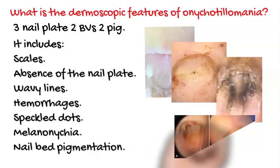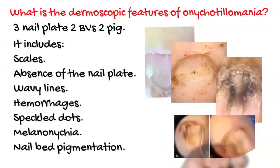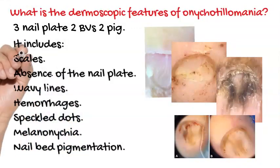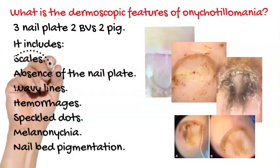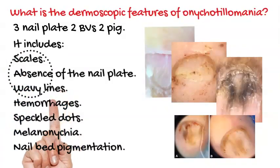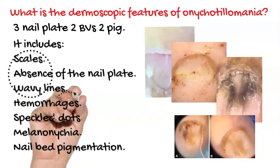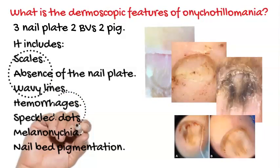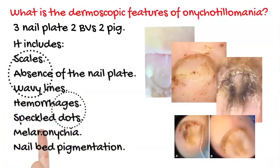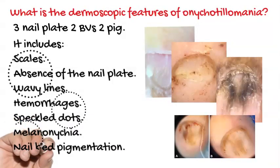To summarize: scales, absence of the nail plate, and wavy lines are related to the nail plate; hemorrhages and speckled dots are related to blood vessels; melanonychia and nail bed pigmentation are related to pigmentary changes. So the dermoscopic features of onychotillomania are seven in total — three nail plate, two blood vessel, and two pigmentary.